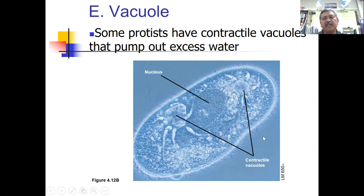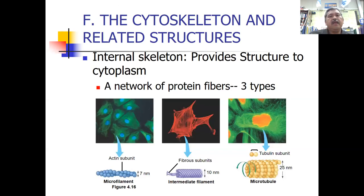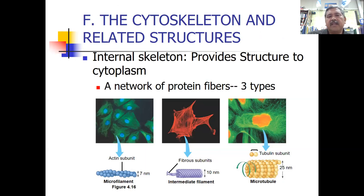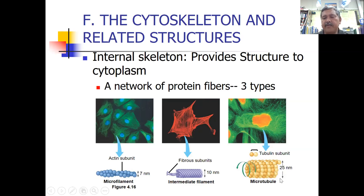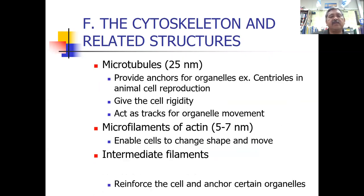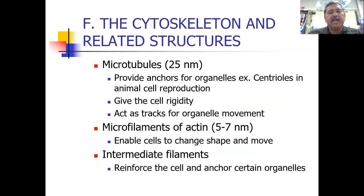As mentioned earlier, the cytoplasm is not just a random liquid — it has structure. Inside that structure is the cytoskeleton, an internal structure made of three different types of fibers classified by size: the microfilament at 7 nanometers, the microtubule at 25 nanometers — a nanometer is 10 to the negative 9 meters, or one billionth of a meter — and in between those two in size, the intermediate filaments.